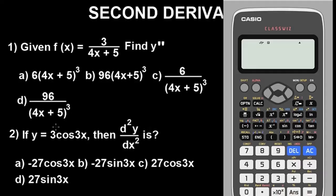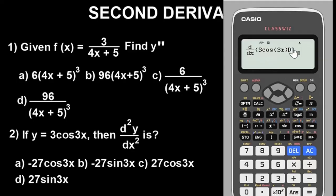Go ahead and differentiate example 2. Press Shift then the differentiation button. Enter: 3 cos(3x) — press Alpha X for the variable. One important thing: ensure your brackets are balanced. You can see we have two opening brackets on the left and two closing brackets on the right, so they're balanced. If brackets are unbalanced you'll get an error when you press equals.